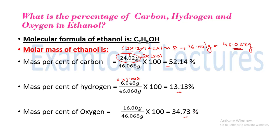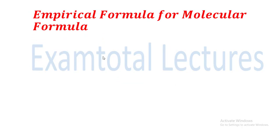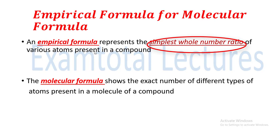So this is the percentage composition — in this way we find out what is the percentage of different constituents present in a compound. Let's talk about empirical formula and molecular formula. An empirical formula represents the simplest whole number ratio of various atoms present in a compound. When you get this simplest whole number ratio, you can deduce what is the molecular formula.